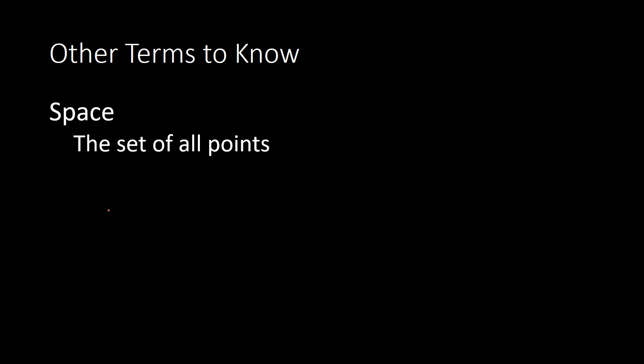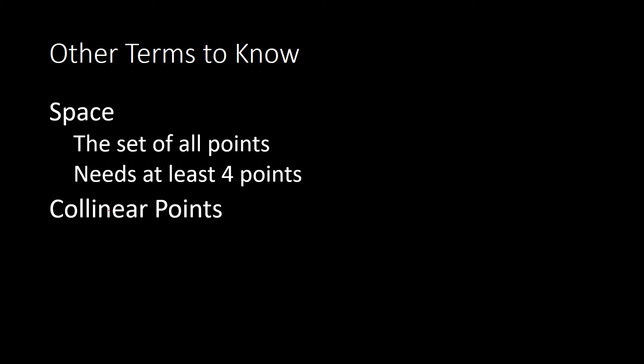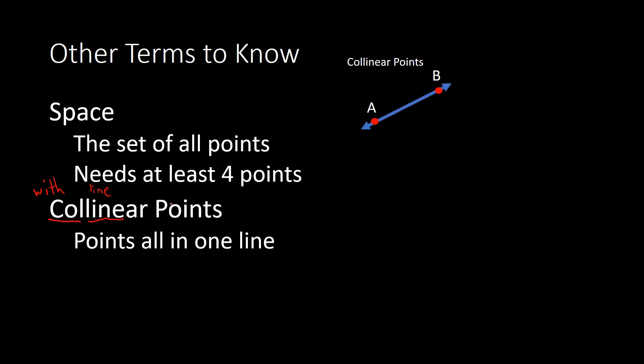A few other terms to know. Space is kind of a nebulous term, but all it means is the set of all points. Just like a line needed two points and a plane needed three points, space needs at least four points to be represented. Another term is collinear. The prefix co- means with, and then we see linear — there's the word line. So this literally means points with the same line. Points A and B are collinear because they are on the same line. Whereas two points would be non-collinear if they're not on the same line.